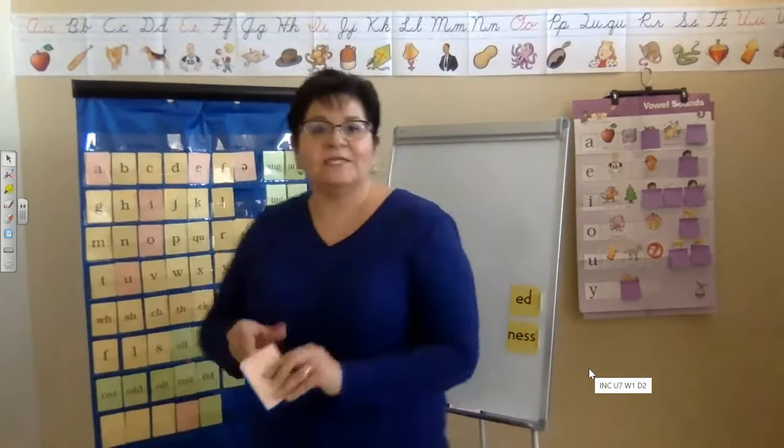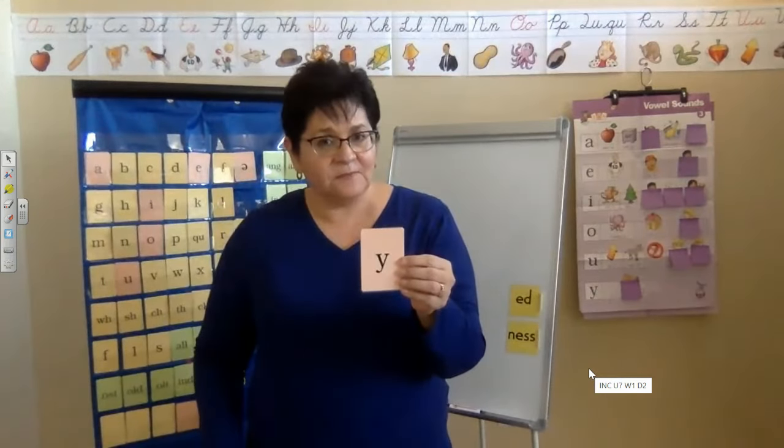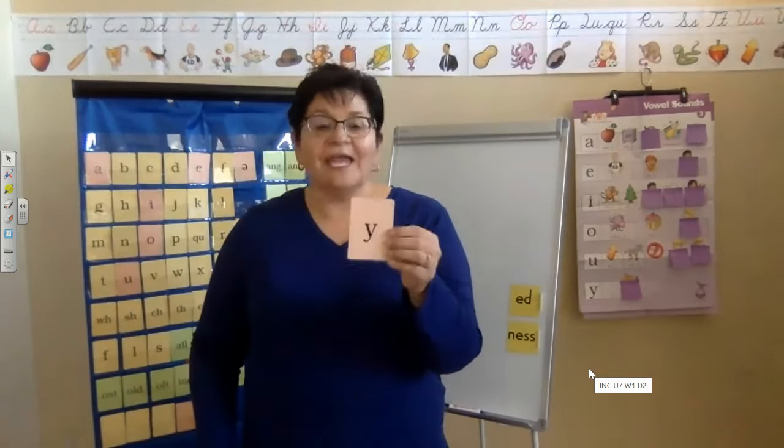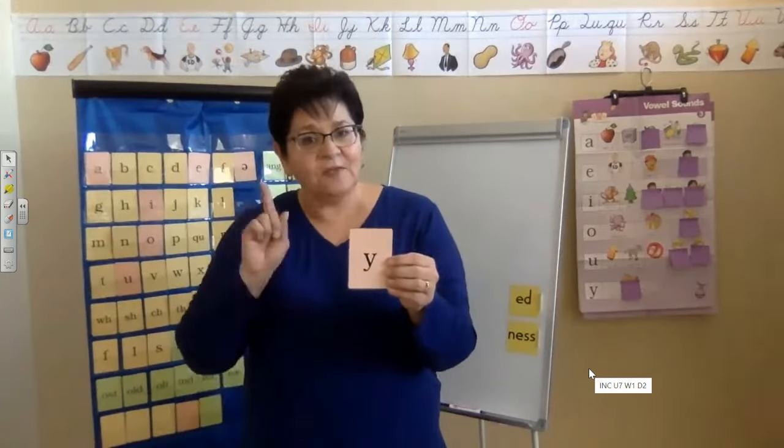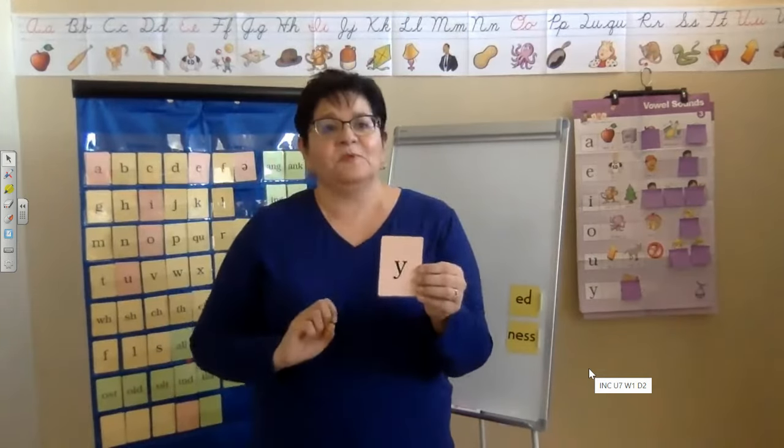I want you to take a look at this vowel Y. What are the two sounds of the vowel Y makes? That's right. Why cry I and why baby E. It says why cry I in a one-syllable word and why baby E at the end of a two-syllable word.